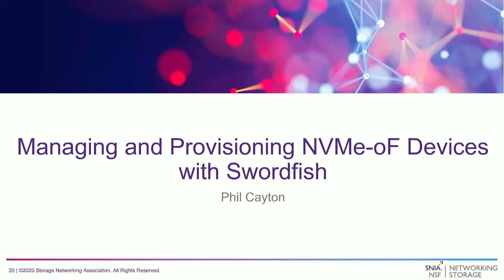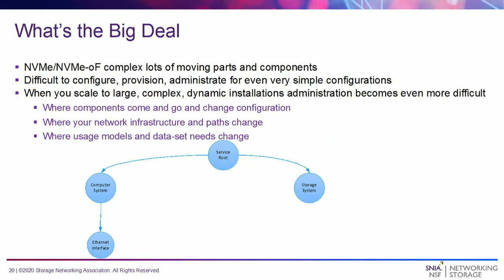Hello, this is Phil Caton with Intel. NVMe provides high-performance, highly parallel, low-latency access to non-volatile memory. NVMe over Fabrics builds on the base NVMe architecture to provide virtual representations of non-volatile memory resources and extends the efficiency of NVMe over Fabrics. With these advantages comes a lot of complexity — a lot of moving parts and components. As you start to scale up, it becomes difficult to configure, provision, and administrate, even for very simple configurations. When you scale to larger, more complex, and more dynamic installations — where components come and go, storage devices come and go, the network infrastructure and paths change, and usage models and data sets change — it becomes even more complex.